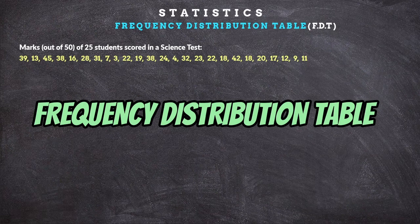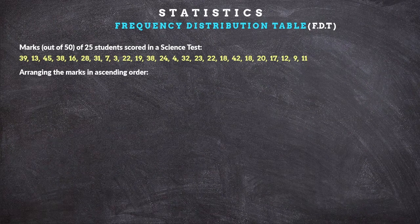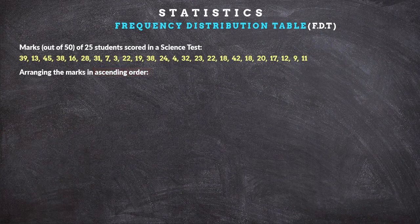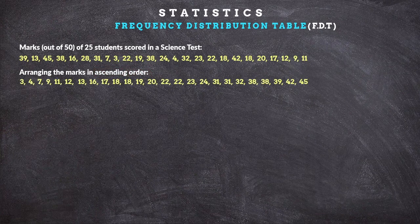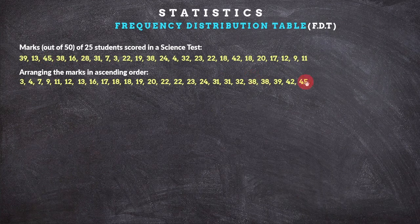You can see the frequency distribution table and the information is the same. The information is arranged in ascending order. The concept of marks is in ascending order and the outcomes. This is the frequency distribution table.